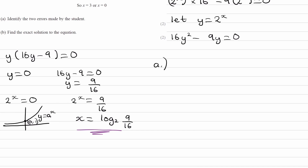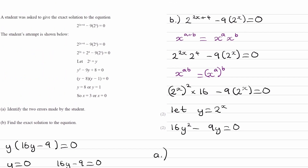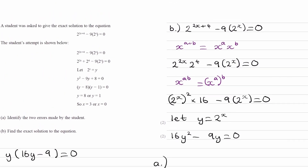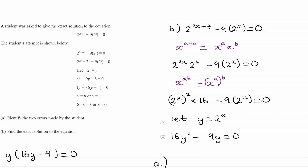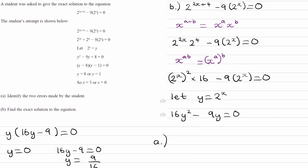For part A, if you were stuck and have now seen my working for part B, have a look at what the student did and see if you can identify the errors they made. Let's go through this step by step. The first line of working is just rewriting the equation, and if you look at it closely there's nothing wrong there — that bit is all fine.